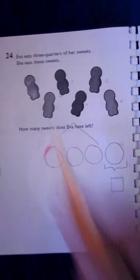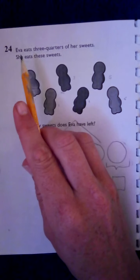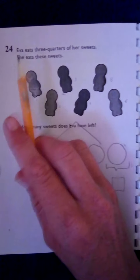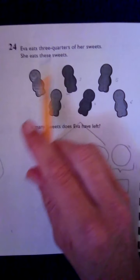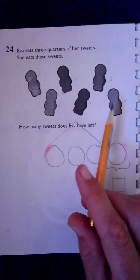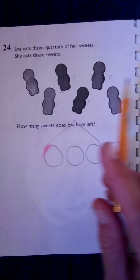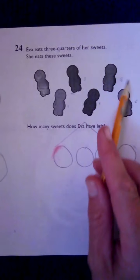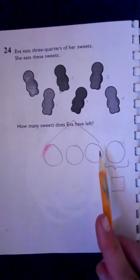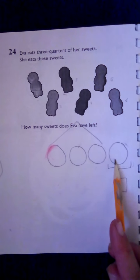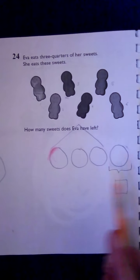Number 24 says Eva eats three quarters of her sweets. She eats this much - one, two, three, four, five, six - so six sweets is three quarters of her sweets, which means we have to share these six sweets into three of her quarters. So I've got one, two, three, four groups here. Three of her quarters shares this many sweets.